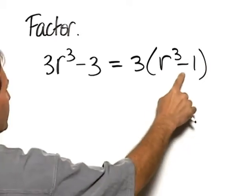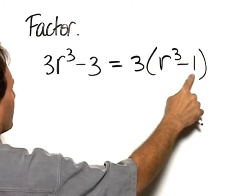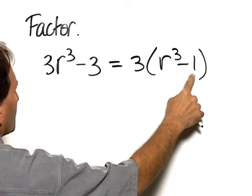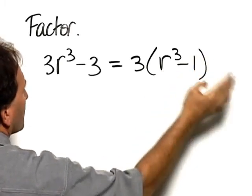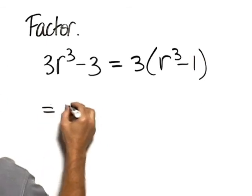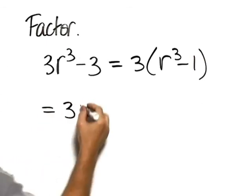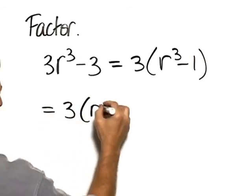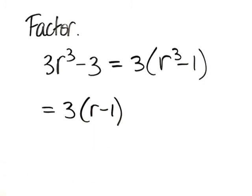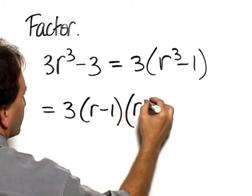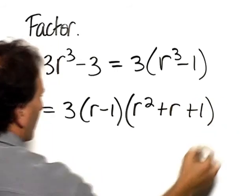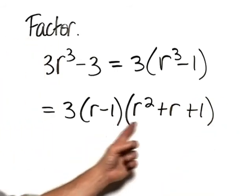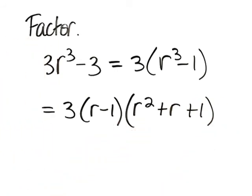Now, this is the difference of 2 cubes, because it's r cubed minus 1 cubed. So the way that factors, we still have our 3, then we have r minus 1, and that multiplied times r squared plus r plus 1, and that's using the formula for the difference of 2 cubes.